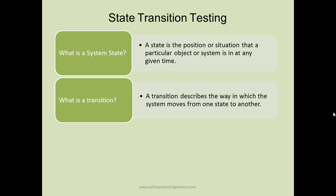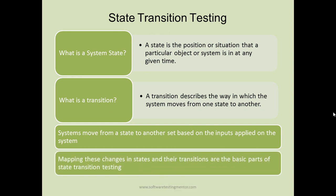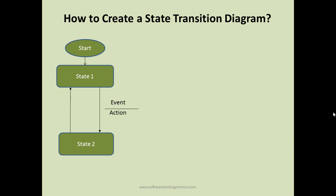The state of the car changes from stationary to moving. A transition describes the way in which a system moves from one state to another. When the car started moving, we started the engine, put on the gear, and accelerated — that's the transition. The system moves from one state to another based on the input applied to the system.